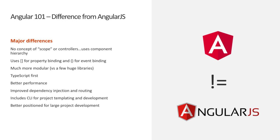When you compare Angular and AngularJS, you'll find Angular has no concept of scope or a controller — those were foundational in AngularJS. Instead, Angular leverages a component hierarchy. In the markup, attribute directives are completely different — using square brackets for property bindings and parentheses for event binding. Angular is much more modular, with much better performance, improved dependency injection, and a cleaner routing story. Ultimately, it's much better positioned to deliver large, complex development applications.